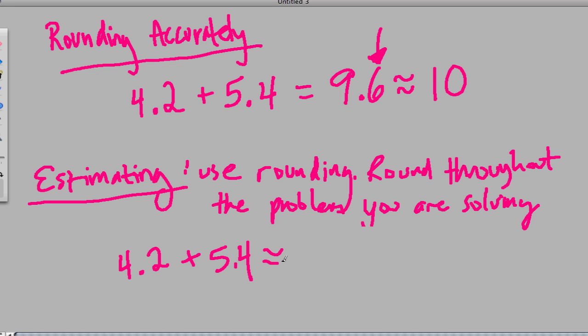But with estimating, we change these numbers right away. We round throughout. So 4.2 becomes 4 because this .2, this 2, is less than 5. Next we have 5.4. That estimates to just 5. And our answer now is 9.